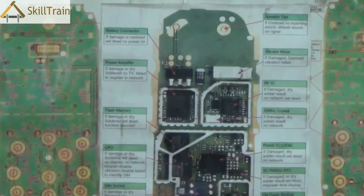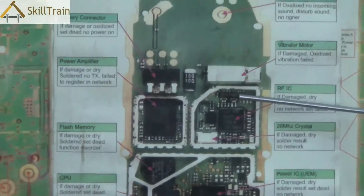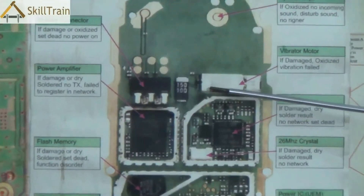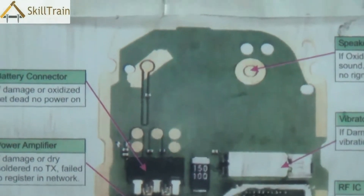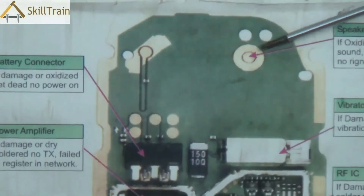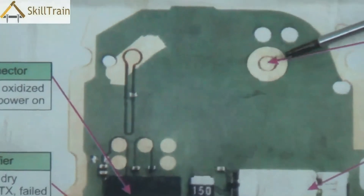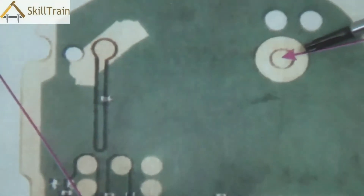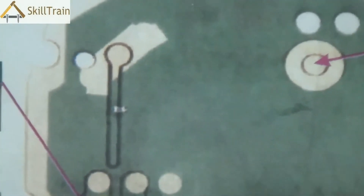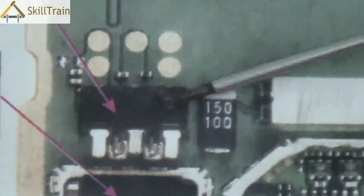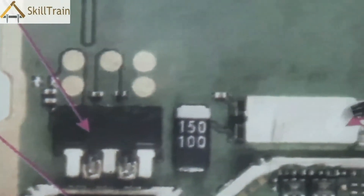In this PCB, as you can see, the way the components are placed is very different from the previous one. From the top, this is the speaker tip, which is where the speaker connects to. Right next to that is the antenna tip where the antenna in a mobile phone connects to. Underneath that is the battery connector where the battery connects to.